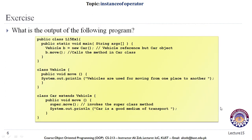To check your understanding of polymorphism, consider a simple example. We have a class Vehicle with a method move that prints a statement, and a class Car that extends Vehicle and overrides move — printing its own statement and calling super.move(). We declare an object of Car using a Vehicle reference, then call move. Can you guess which method will be called and what the output will be?